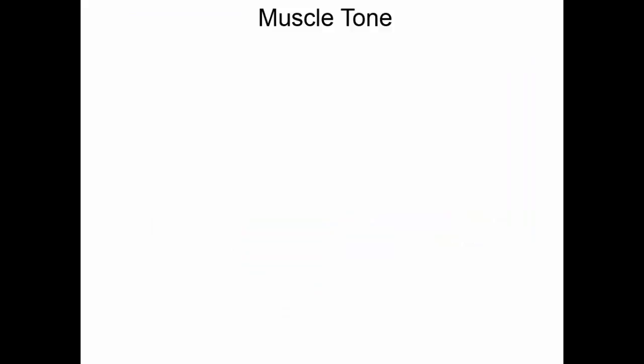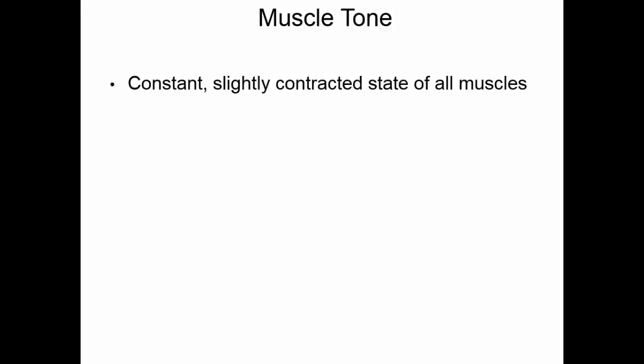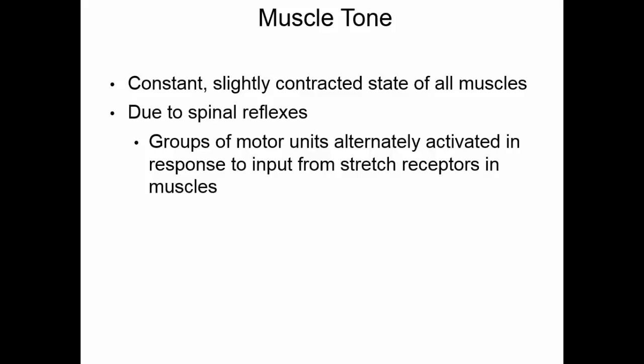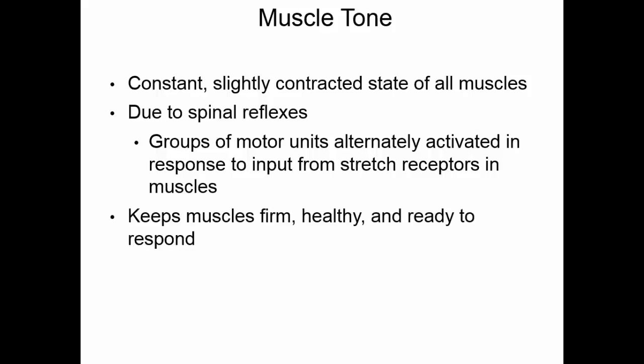Muscles display something called muscle tone — a constant, slightly contracted state that all muscles are in. This is primarily due to spinal reflexes: groups of motor units are alternately activated in response to input from various stretch receptors in the muscles, keeping muscles just slightly contracted. All of the motor units take turns so that no one fatigues. This keeps muscles firm and healthy, keeps you ready to respond, and also provides joint stability and assists with posture.